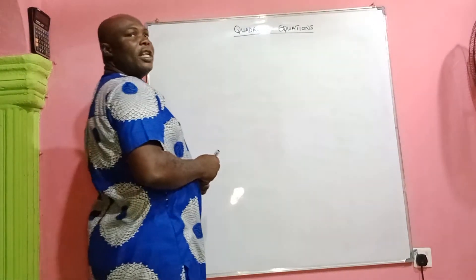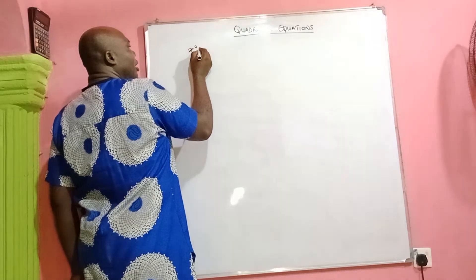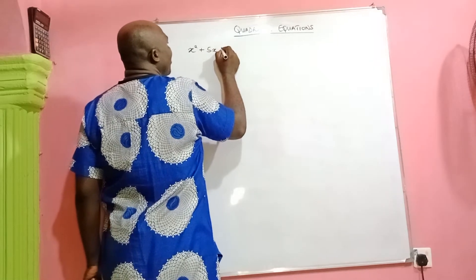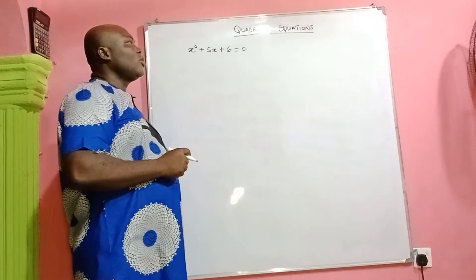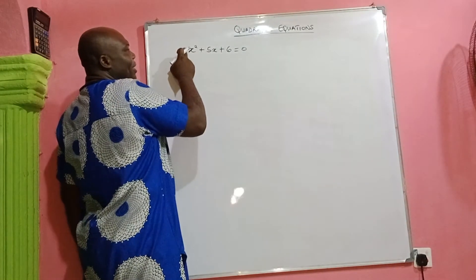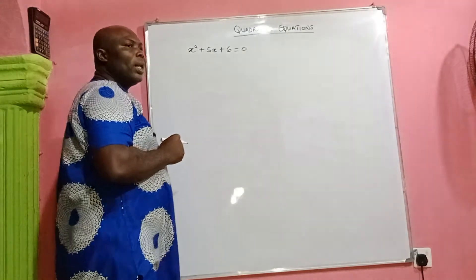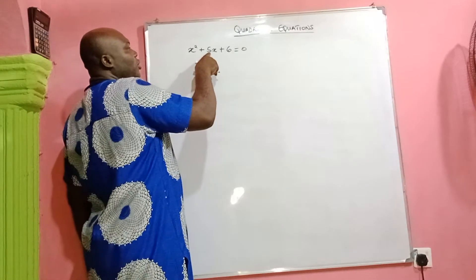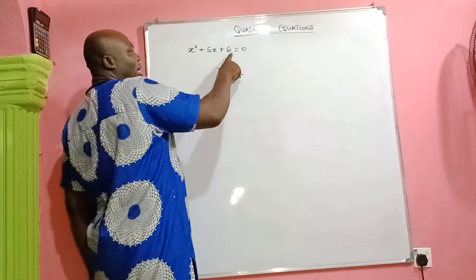Given the quadratic equation x² + 5x + 6 = 0, if you're asked to find the roots using factorization, look at this: the coefficient of x² is 1, the coefficient of x is 5, and the constant is 6. The rule is to look for two numbers such that when you add them together you get positive 5, and when you multiply them together you get positive 6.